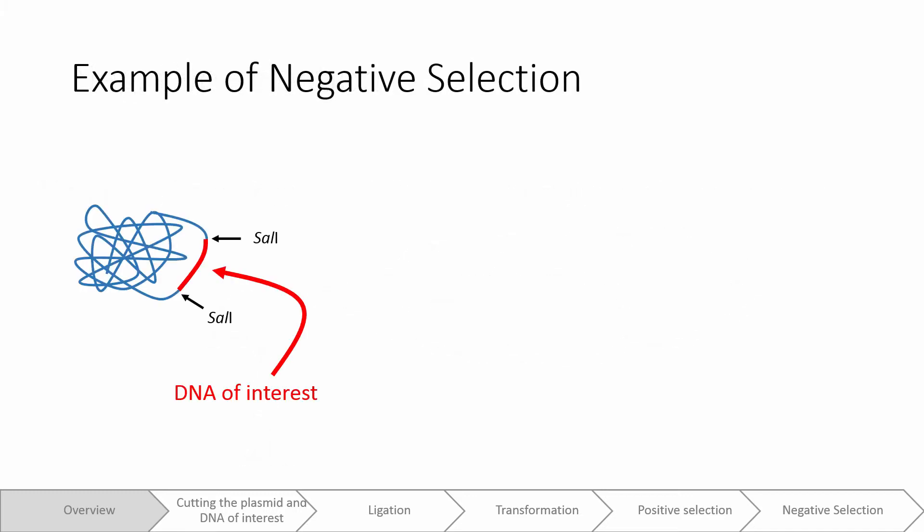Let's pretend that you have a DNA sequence of interest, shown in red, that you want to insert inside of a plasmid vector. We're going to assume that for this example, there are two convenient Sal1 restriction enzyme recognition sites that flank our DNA sequence of interest. Our plasmid vector contains two genes that we're interested in. One is the ampicillin resistance gene, that allows E. coli to survive in the presence of ampicillin,